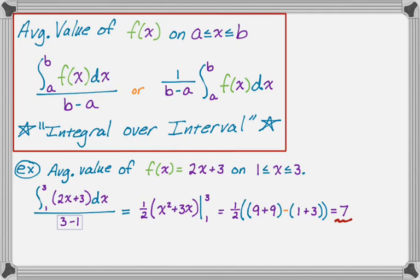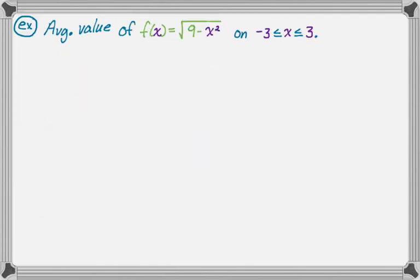I want to do one more problem to show you how these things can look a little bit different. We want to find the average value of f(x) = √(9 - x²) on the interval from -3 to 3. This one, I'm going to set up exactly the same way because it's an average value problem.